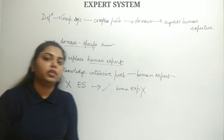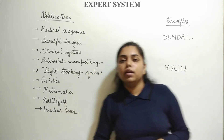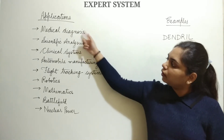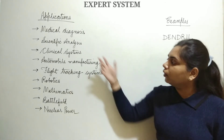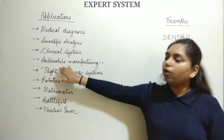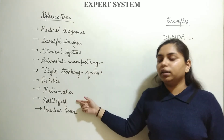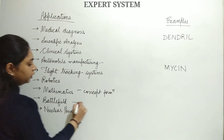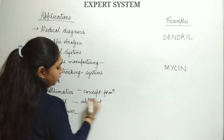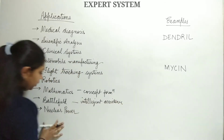Now let's discuss the examples and applications of expert systems. Applications include: medical diagnosis and clinical systems, MRI diagnosis machines, scientific analysis, automobile manufacturing, flight tracking systems, robotics, mathematics for concept formation, and battlefield intelligent assistance systems.